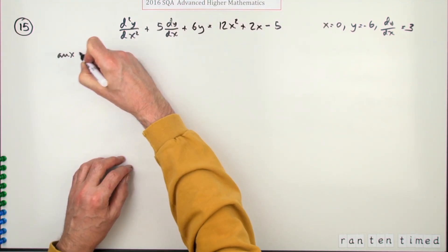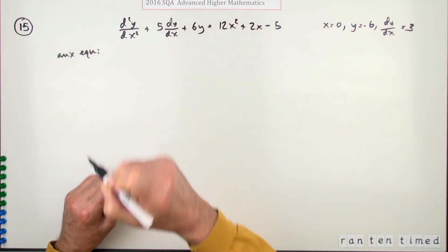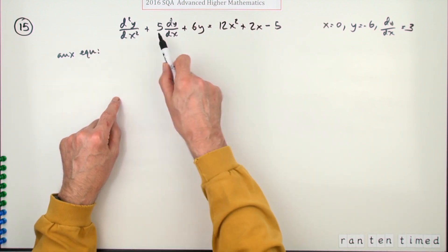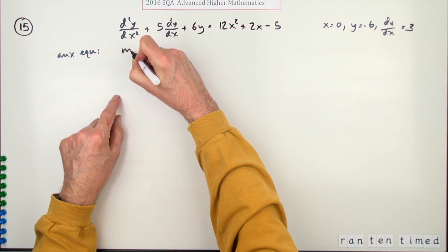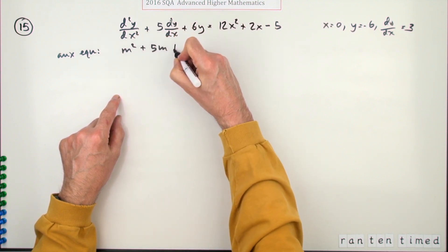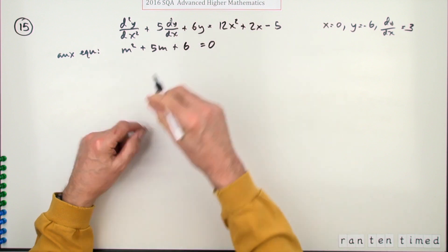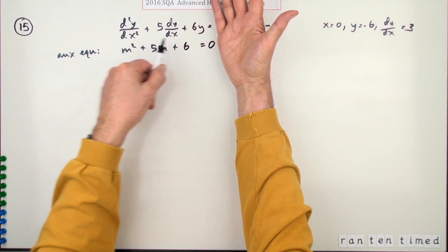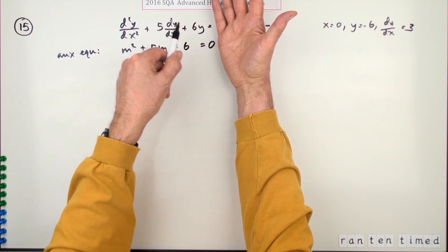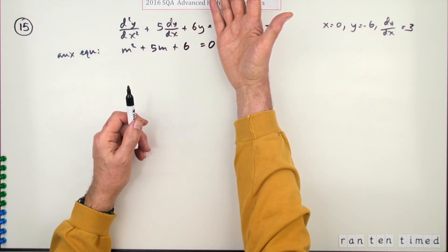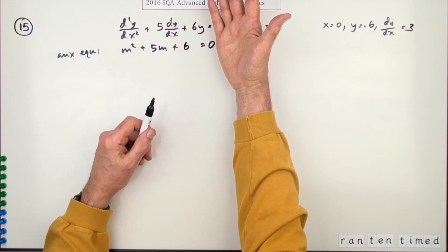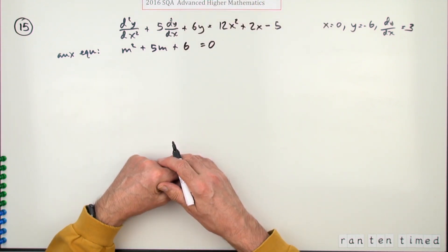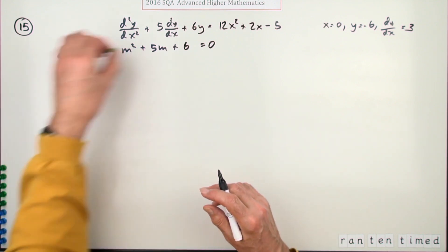Well, standard technique. First of all, let's solve the homogeneous equation, the equation equal to zero. So we're going to form the auxiliary equation. You don't need to write these bits down but I tend to do anyway. So the auxiliary equation is formed by these three coefficients: m squared plus 5m plus 6 equals zero.